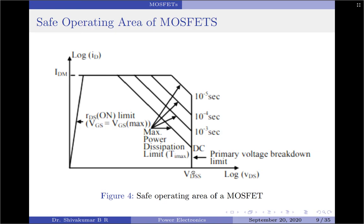There is no distinction between the forward-biased and reverse-biased safe operating areas for a MOSFET — they are identical. Note that for a BJT, they are different. Due to the presence of the anti-parallel body diode, a MOSFET cannot block any reverse voltage. The body diode can carry an RMS current equal to IDM and also has a substantial surge current carrying capability. When reverse biased, it can block a voltage equal to VDSS.